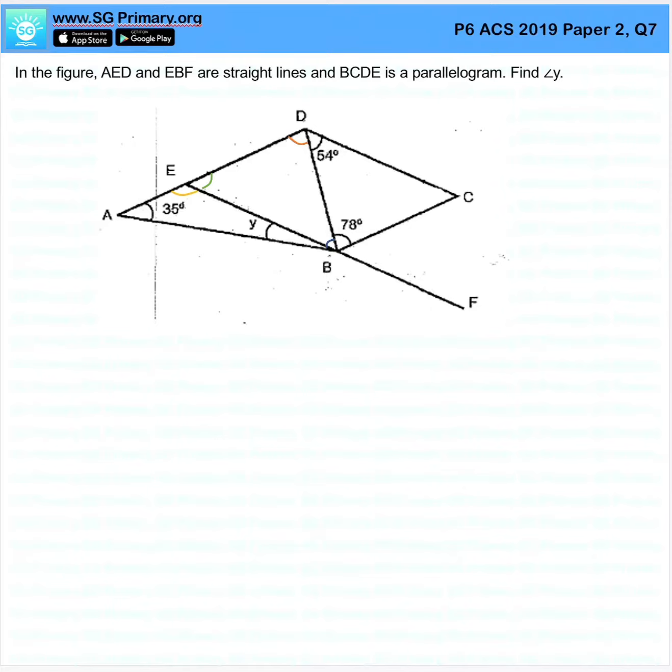Now because it's a parallelogram, this 54 is also 54 here, that's one, another one. And 78 is also 78 degrees here, this is purely because they are angles within a parallelogram.